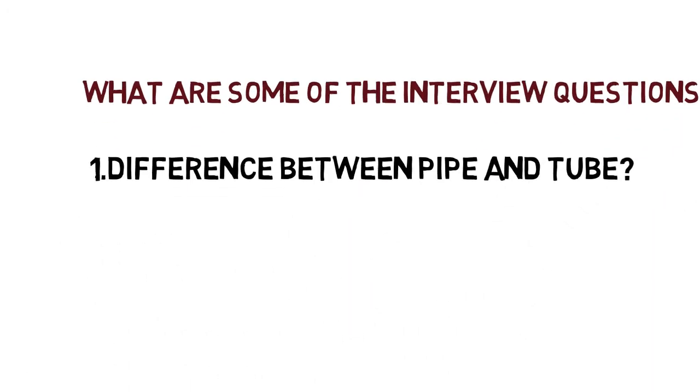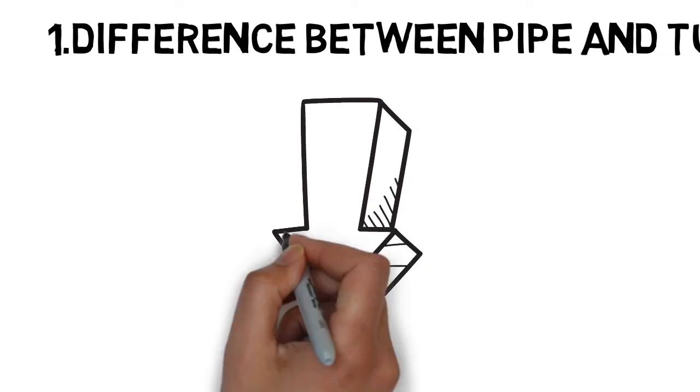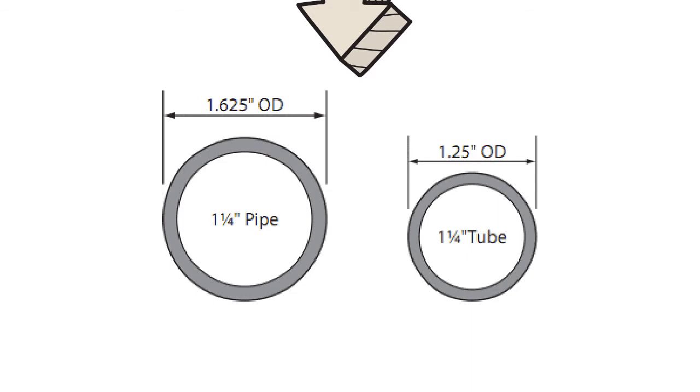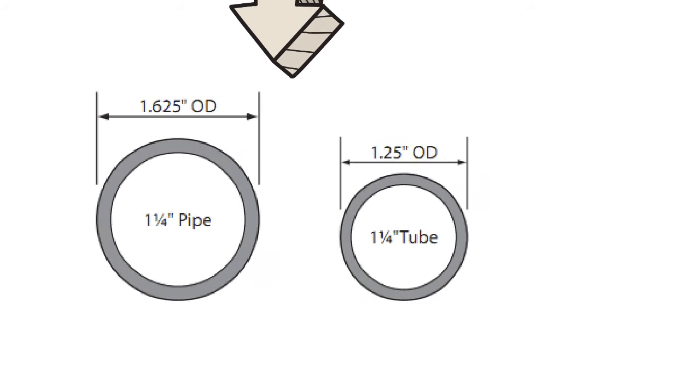Answer: There is always a debate between differentiation of pipe and tube. Pipe is always designated by its inside diameter, ID, because the main purpose of pipe is to carry fluid, while the tube is always designated by its outside diameter, OD.